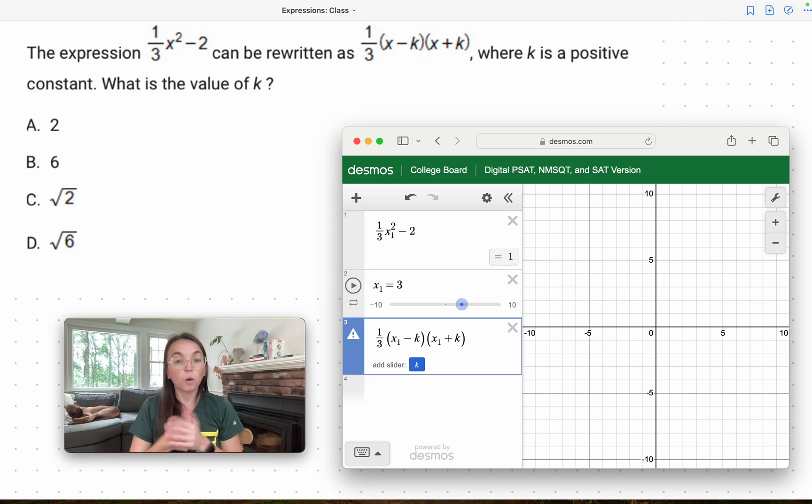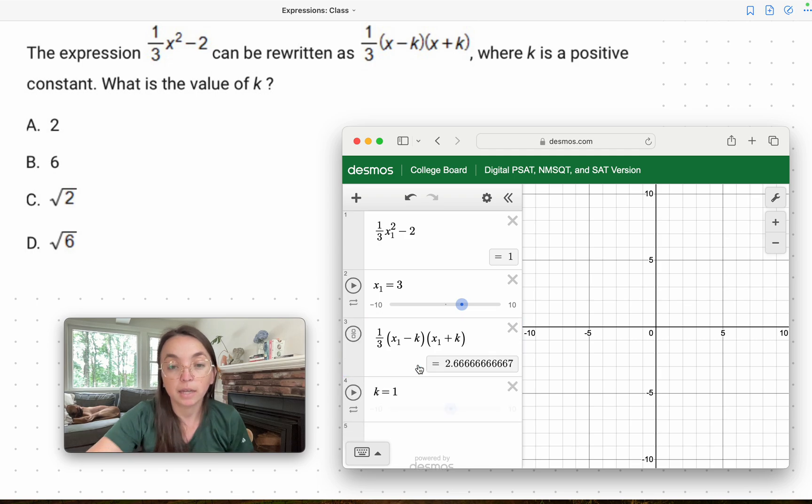Now we do want to add this slider for k as well. So as you can see from the expression, k is only going to be on one side of the equation. What Desmos is doing is that it's plugging x sub 1 into both of these. But since k is only on this one side, it's only going to plug k into this side of the equation.